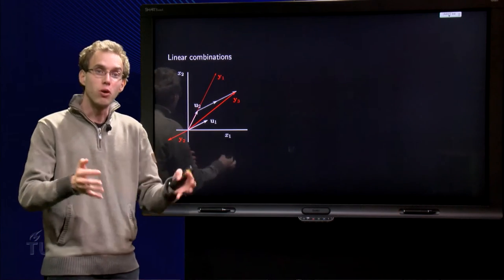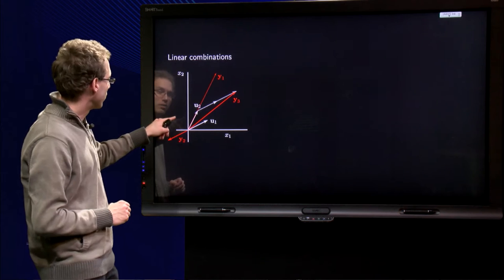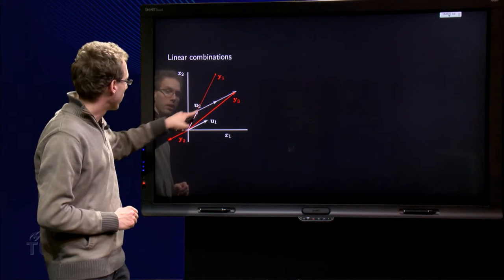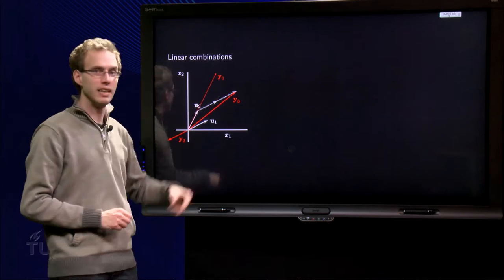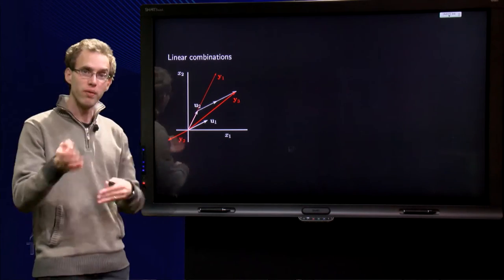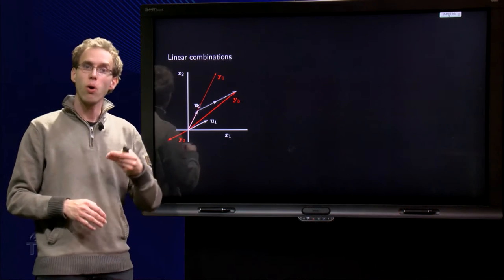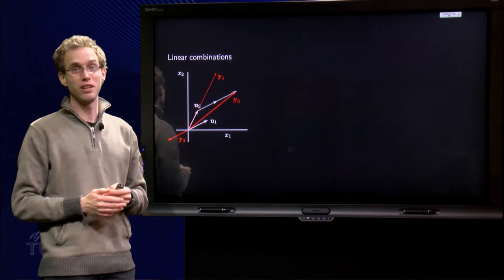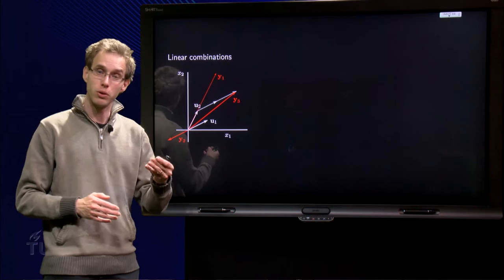Or I can combine both of them, I can take for example 2 times u1 plus u2, and then I get y3. And those vectors y1, y2 and y3 are all examples of linear combinations of u1 and u2.